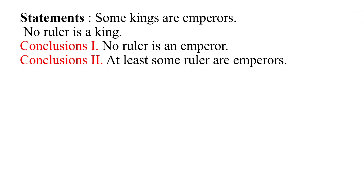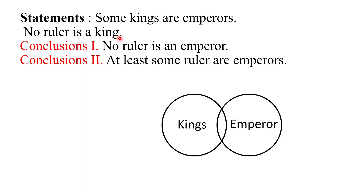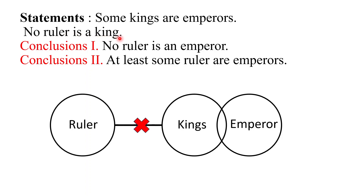This is the first question. The statement says some kings are emperors — this is the circle of kings and some kings are emperors. Statement 2 says no ruler is a king, which will be drawn like this. Now the conclusion one says no ruler is an emperor, so here they are talking about ruler and emperor.